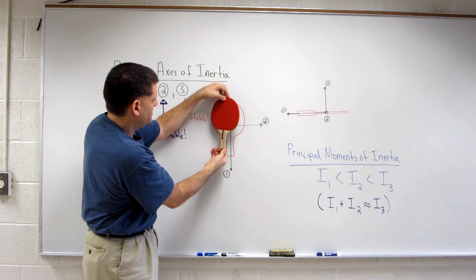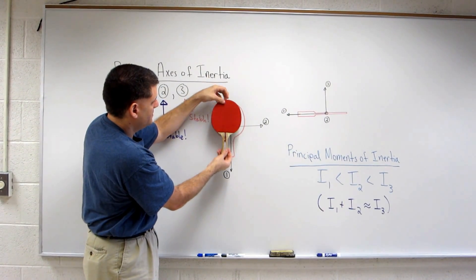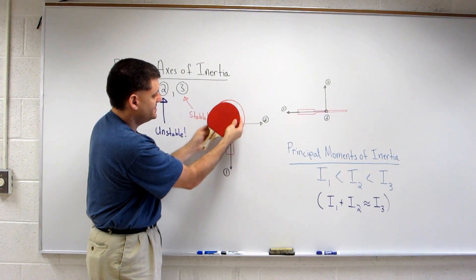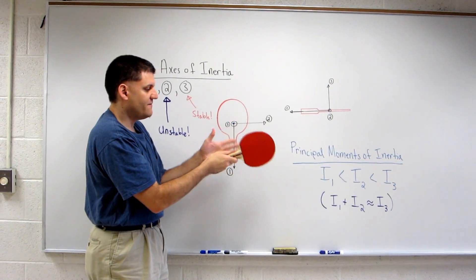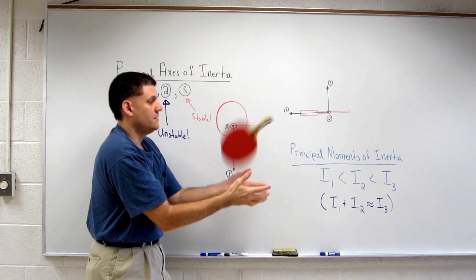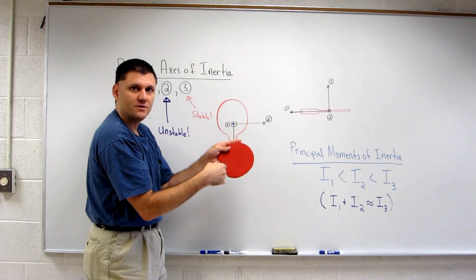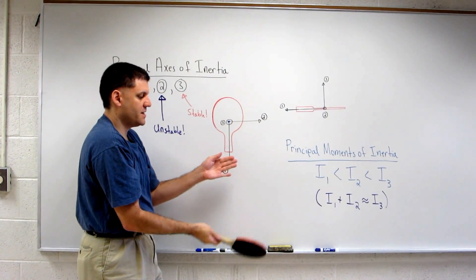So any rotation about the one axis or the three axis is stable. And what that means is if I rotate about the three axis, the rotation will continue. If I rotate about the one axis,